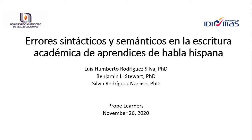Este es el nombre del proyecto de investigación que sometimos el Dr. Stewart y un servidor en el año 2019, el cual fue aprobado en ese mismo año. Lo sometimos por ahí por abril y fue aprobado en noviembre del 2019. El nombre es 'Errores Sintácticos y Semánticos en la Escritura Académica de Aprendices de Habla Hispana.' Al leer la literatura y tener discusiones con doctores expertos en el área, este título lo quisimos cambiar pero no fue posible porque así fue registrado y aceptado desde el inicio.